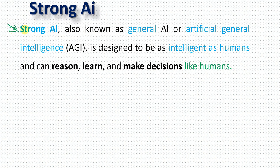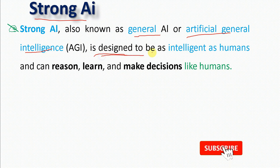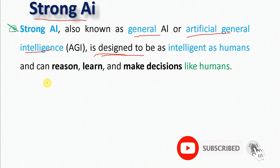The second type is strong AI, also known as general AI or artificial general intelligence. It is designed to be as intelligent as a human.